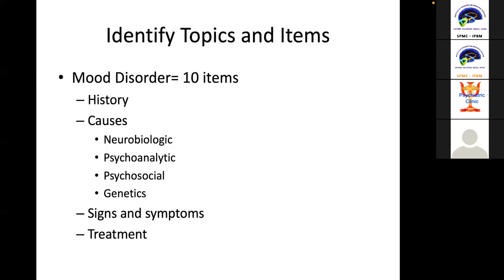The first thing to do is to identify topics and items. For example, the topic is mood disorder and you are expected to give 10 items. There are so many subtopics under mood disorder, so one of the first things to do is enumerate the subtopics — for example, history, causes, signs and symptoms, and treatment. Then divide the 10 items according to how many subtopics you have.